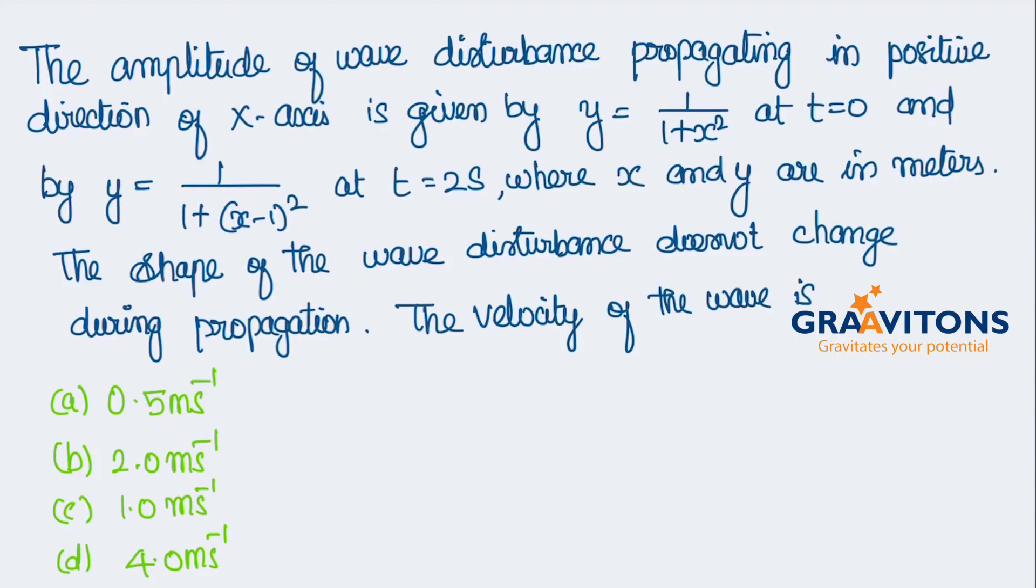The amplitude of wave disturbance propagating in positive direction of x-axis is given as y = 1/(1+x²) at t=0, and y = 1/(1+(x-1)²) at t=2 seconds, where x and y are in meters. The shape of the wave disturbance does not change during the propagation.